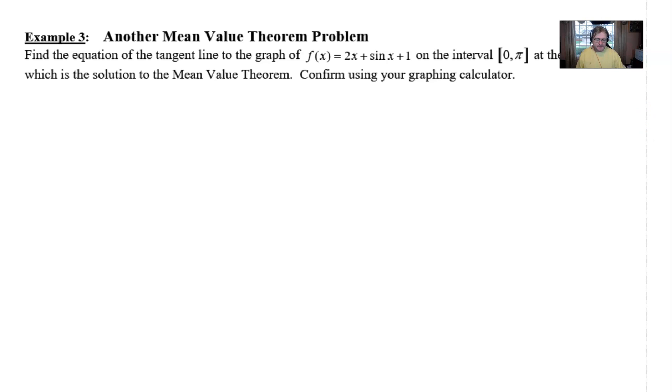Alright, as you can see, this problem is fairly short, not a lot of text to it. It says to find the equation of the tangent line to the graph of f(x) = 2x + sin(x) + 1 on the interval [0, π] at the point which is the solution to the mean value theorem. And we're going to confirm our results here at the end using a graphing calculator.